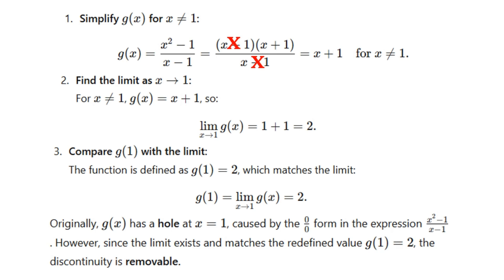We should not forget that g(x) has a hole at x equals 1, because the denominator is 0 — it's 0/0 from the expression (x² - 1)/(x - 1). But since the limit exists and matches the defined value g(1) = 2, we can conclude that the function g(x) has a point of discontinuity that can actually be removed.